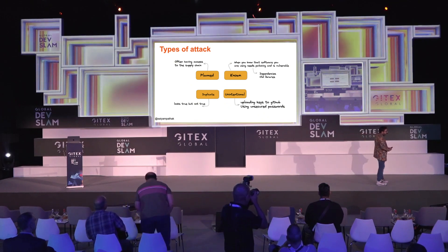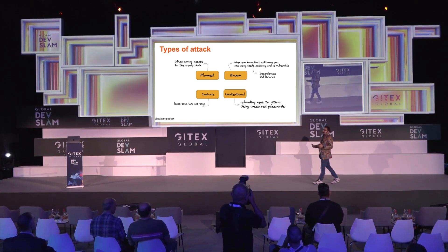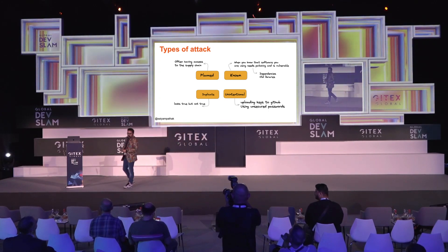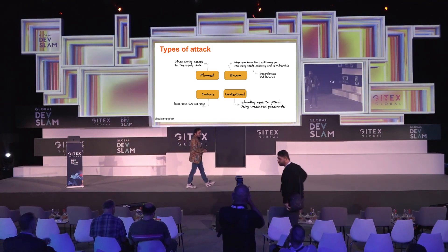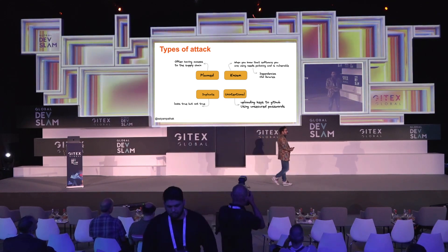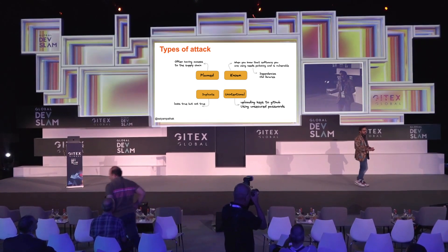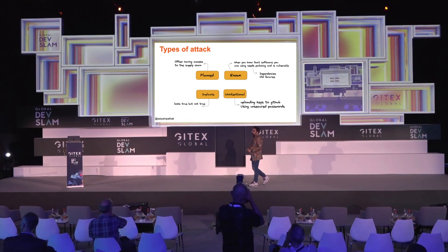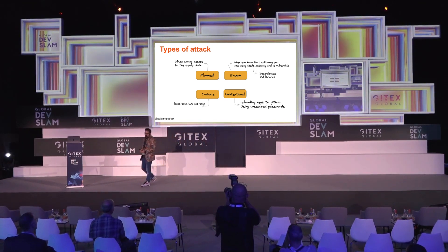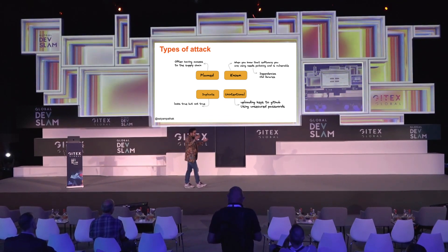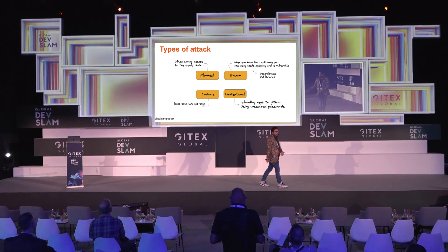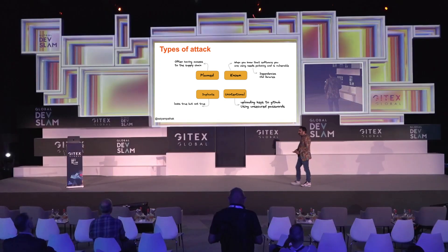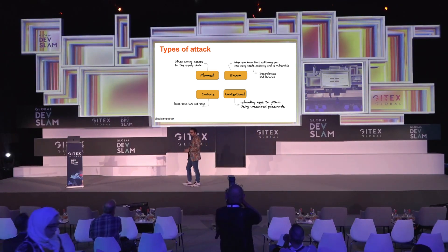I like to categorize these attacks. First are planned attacks, where hackers or a group target a specific industry or piece of software. Second are known attacks — there are many vulnerabilities we actually know about. We have security scanning tools, but we leave some critical vulnerabilities unpatched, and we only react when something big happens. We don't patch the OS, we don't patch the software. Third are unintentional ones — it's obvious not to store passwords or SSH keys in GitHub, but people still do, still leaving AWS credentials in GitHub repositories and getting exposed. And fourth are duplicate attacks — like the PyPI use case — something that looks authentic but isn't, through typosquatting or adding a Unicode character you won't notice, but with malicious code inside.